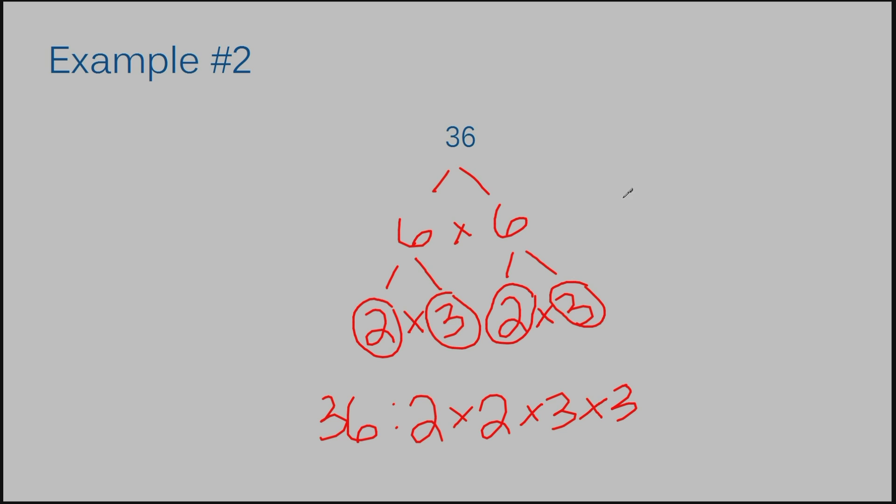And don't forget, if you had another set of factors in mind to break down 36, you would have ended up with the same answer as long as you did everything correctly. You could have chosen 3 times 12 and that would have been fine or 2 times 18 and that would have been fine. All would have ended with 2 times 2 times 3 times 3.